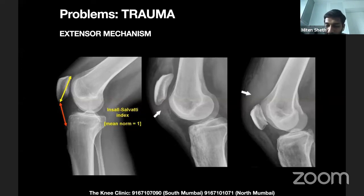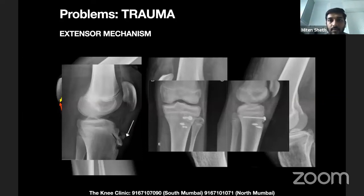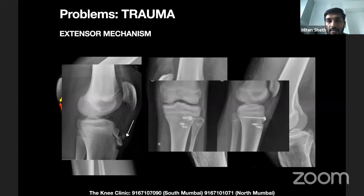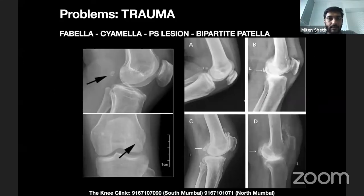In adolescents, if a 13-year-old football player with known Osgood-Schlatter's has a sudden eccentric quadriceps contraction, the fragmented tibial tuberosity can avulse completely. On X-ray, without annotating the arrow, you might read it as a normal Osgood-Schlatter's X-ray, but this is actually an avulsion associated with point tenderness — it needs to be picked up and fixed.